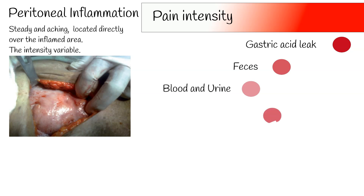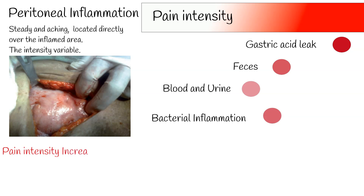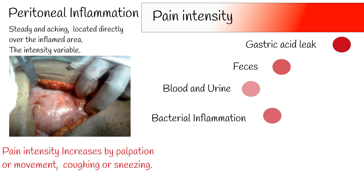Bacterial inflammation from pelvic inflammatory processes can also be mild, until substantial growth and multiplication cause significant amounts. The pain of peritoneal inflammation also increases with changes in pressure or tension of the peritoneum — for example, pain increases with palpation, movement, coughing, or sneezing. The patient with peritonitis characteristically lies quietly in bed, preferring to avoid motion, in contrast to the patient with colic, who moves and cannot find a comfortable position.